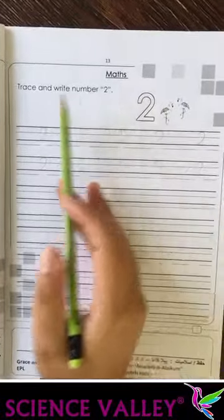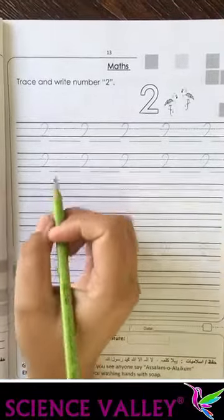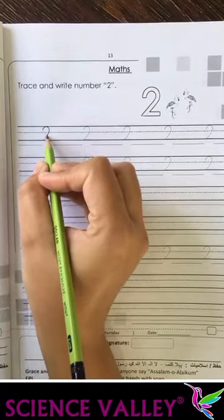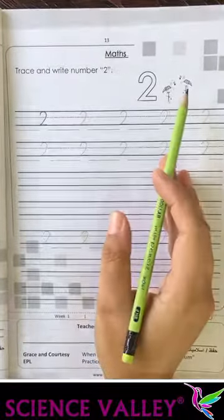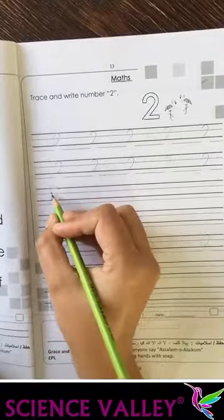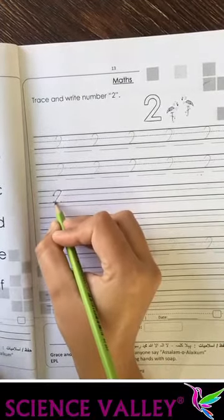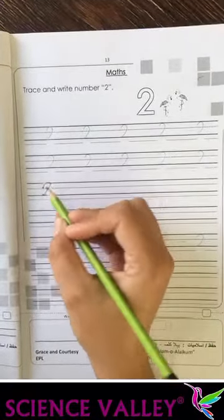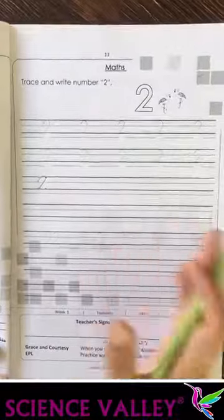Page 13, subject Math. Trace and write the number two. Two flamingos. Now we trace the letter two. Subse pehle upar se start karte, niche ke taraf ek straight line. Number two, two flamingos. Abhi hand-writing start karein. Us ke liye aap four dots dalen ge. First dots, second dots se milay, third dots, fourth dots se milay. Complete this work with yourself with the help of your parents.